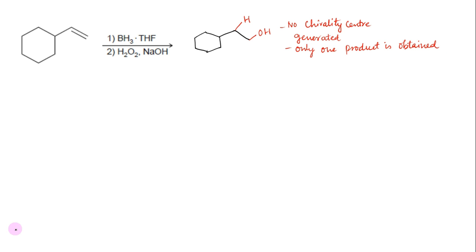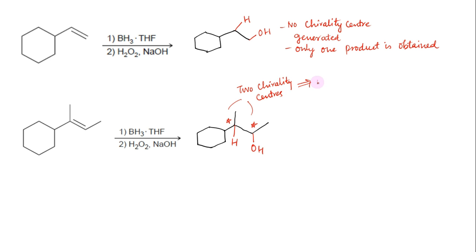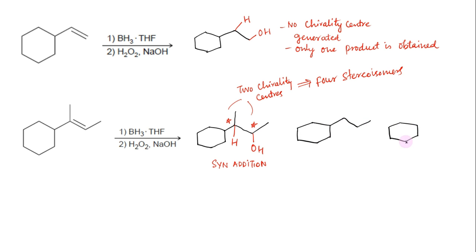Consider this second example. Again, the reagents indicate hydroboration-oxidation. The net result of this two-step process is the anti-Markovnikov's addition of H and OH across the pi bond — that is, OH is to be placed at the less substituted carbon and H on the more substituted carbon. In this case, two chirality centers are generated, so four stereoisomers — that is, two pairs of enantiomers — are possible. The stereochemical requirement for syn addition demands that H and OH be placed on the same face of the pi bond, giving only two enantiomers.